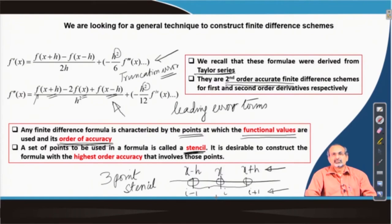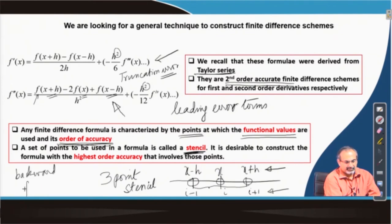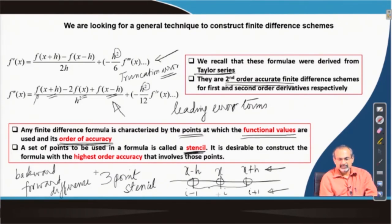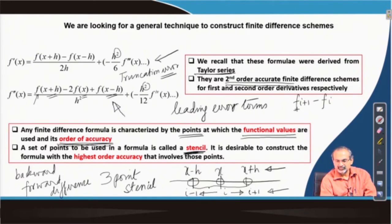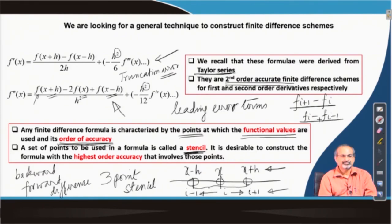When we discussed finite difference last time, we talked about backward and forward differences. If you are looking at lower indices, then you are talking about backward differences. If you are looking at forward indices, you are talking about forward differences. You may have a forward difference expression where you take a difference in functional value between two points, whereas a backward difference expression involves a difference in functional values between points i and i minus 1.